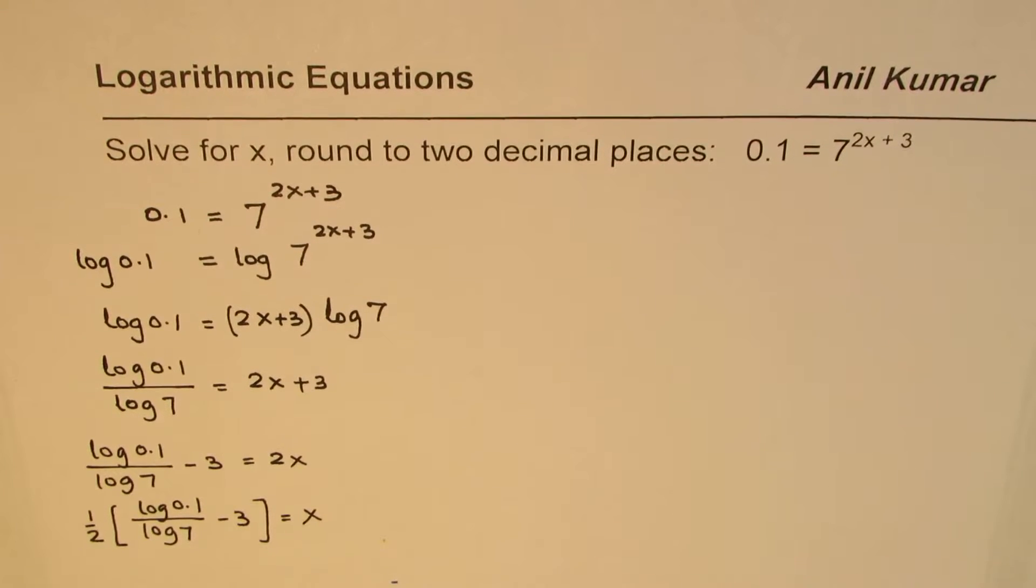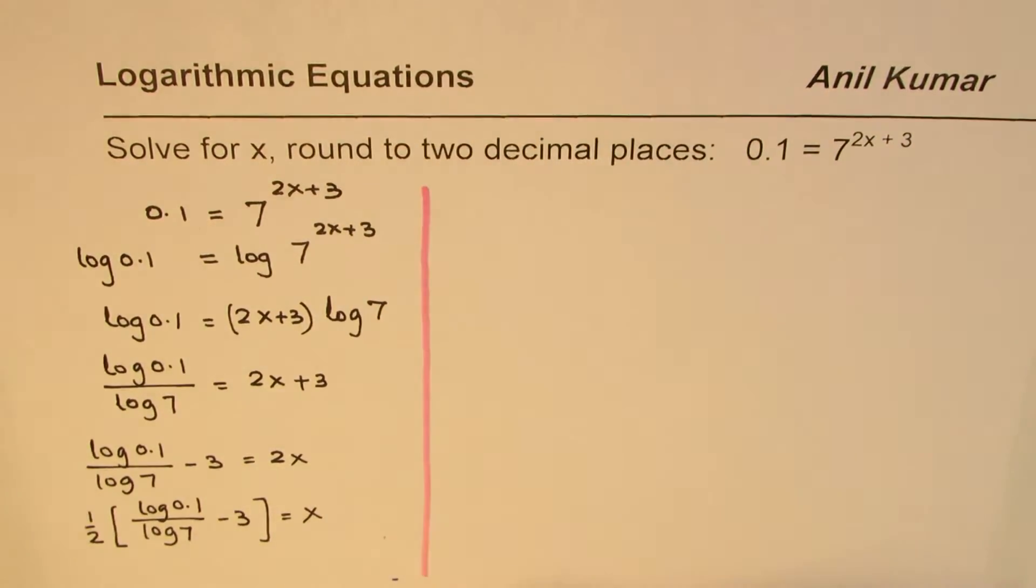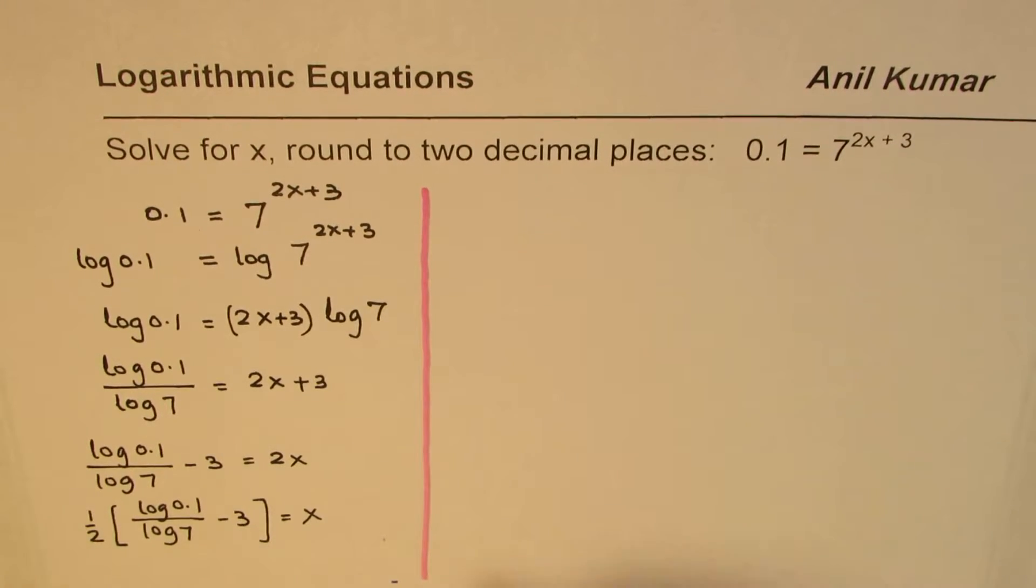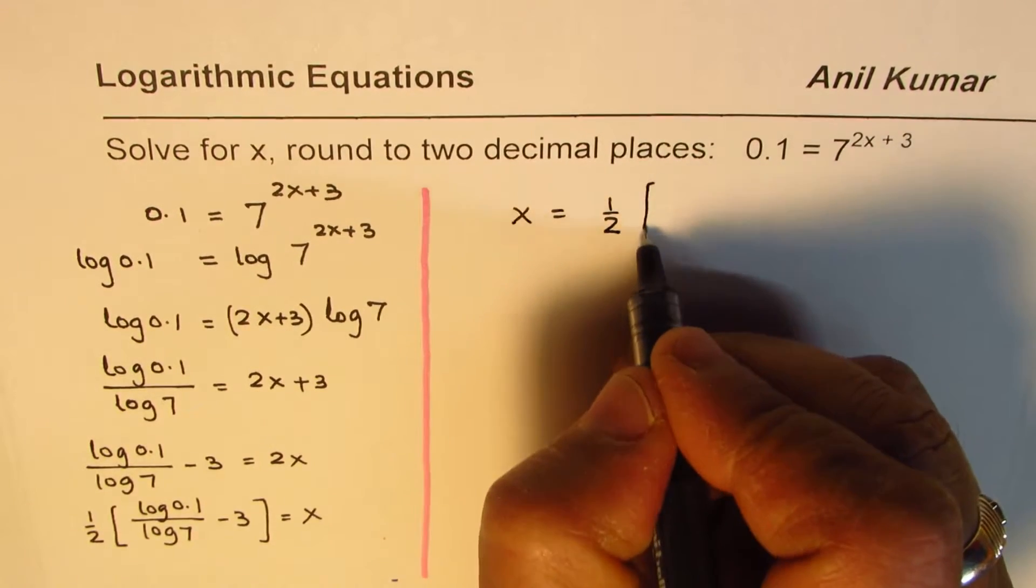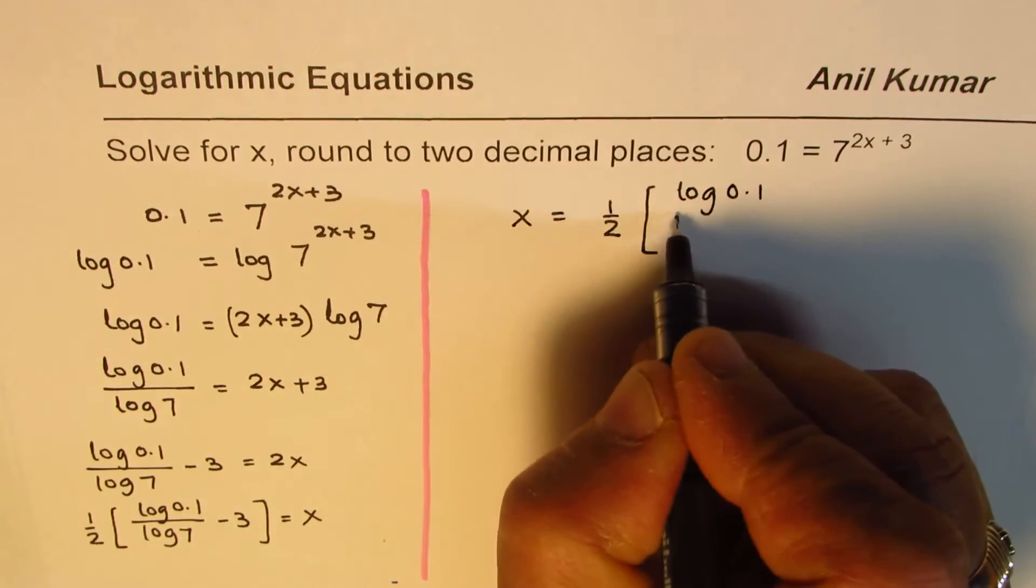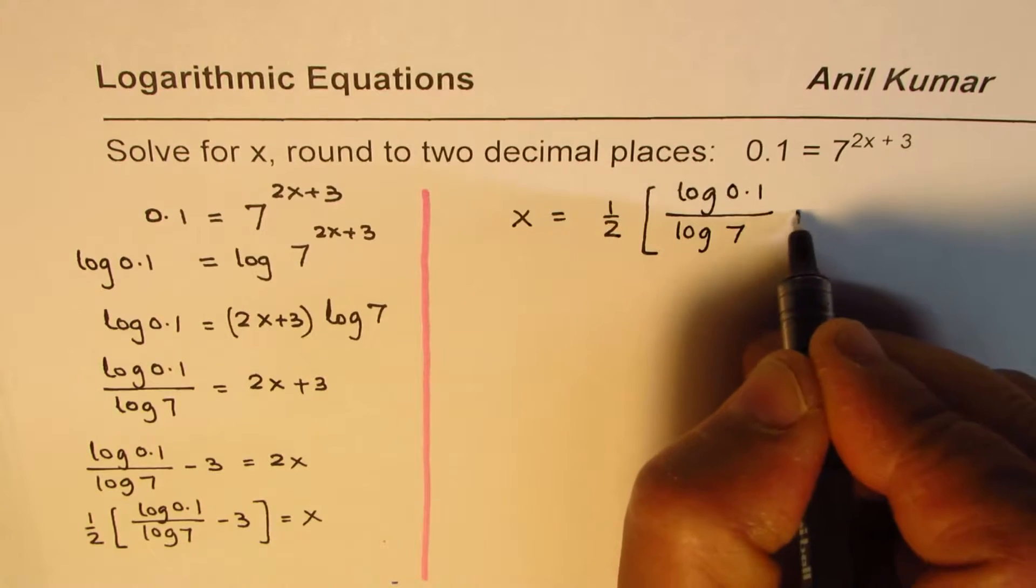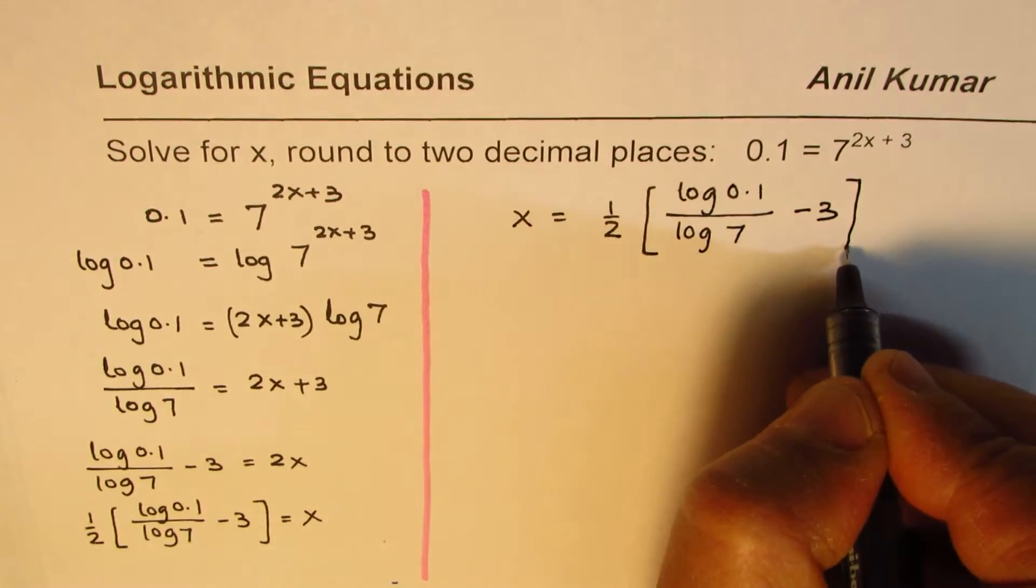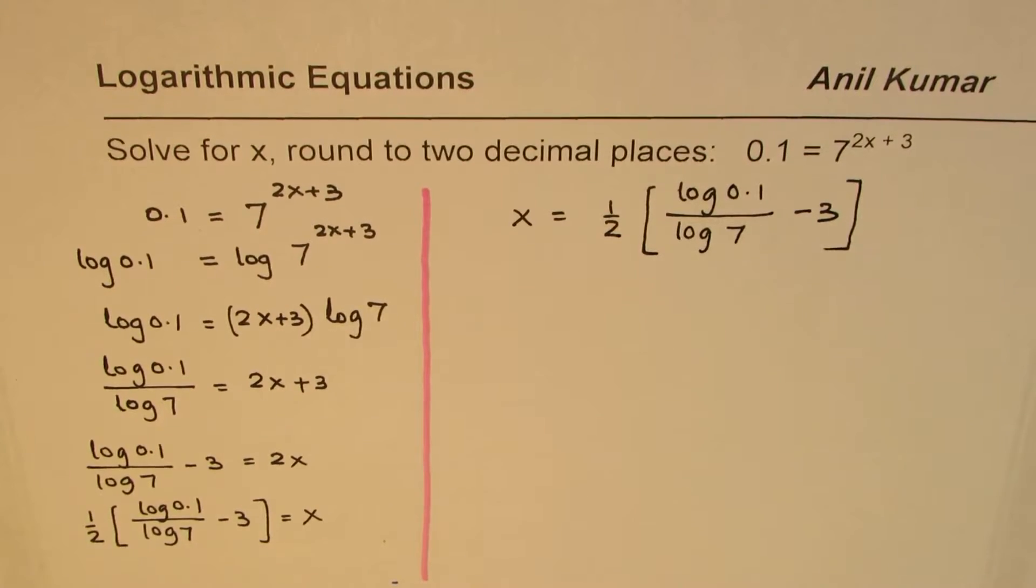To calculate this value, we need to use the calculator and round it to two decimal places as specified. So x = ½[log(0.1)/log(7) - 3]. Now let's calculate this.